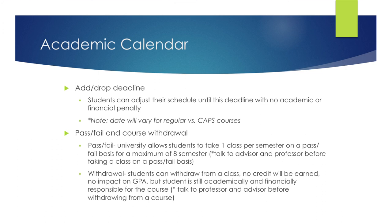Students may need to withdraw from a class for a variety of reasons. When students withdraw, a W is listed on their transcript, no credit is earned, and there is no impact on GPA. Students are still financially responsible for classes they withdraw from. Students planning to withdraw should speak to their advisor about the impacts on their academic plan, and students with financial aid should speak to their financial aid counselor about the financial implications of a withdrawal.